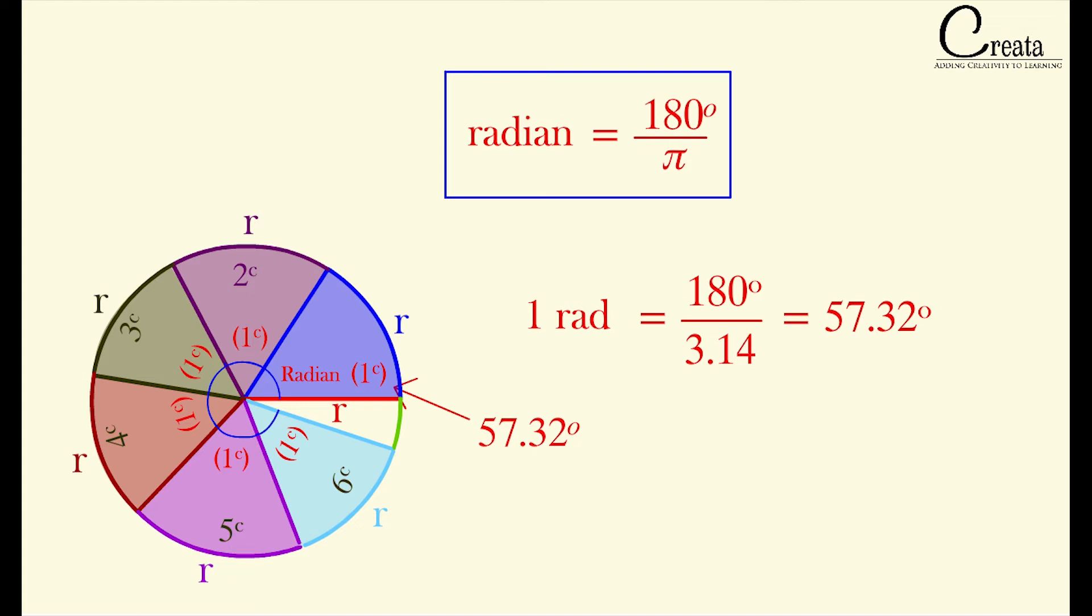This is fixed for all circle irrespective of size of a circle. Means each radian in a circle is equal to 57.32 degree. You can add all the 6 radians, it will come out to be 343.92 degree, which is slightly less than 360 degree, a complete circle.